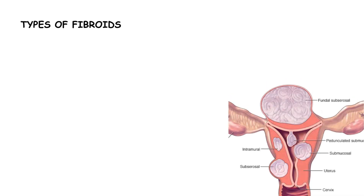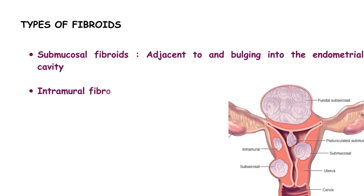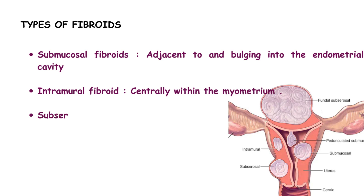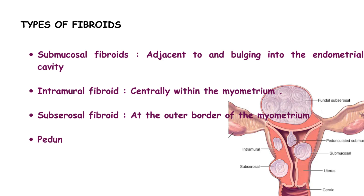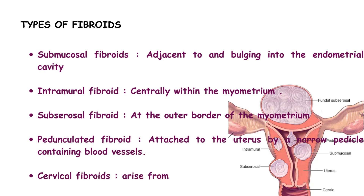Fibroids are classified according to the site within the myometrium. Submucosal fibroids are adjacent to and bulging into the endometrial cavity. Intramural fibroids are centrally within the myometrium. Subserosal fibroids are at the outer border of the myometrium. Pedunculated fibroids are attached to the uterus by a narrow pedicle containing blood vessels. Cervical fibroids arise from the cervix.